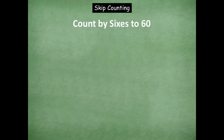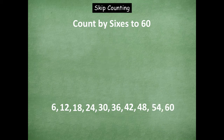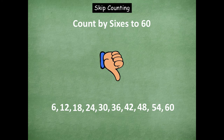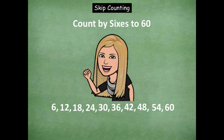Now let's skip count by sixes to sixty. We're gonna start with counting up. Here we go. Six, twelve, eighteen, twenty-four, thirty, thirty-six, forty-two, forty-eight, fifty-four, sixty. Counting down. Fifty-four, forty-eight, forty-two, thirty-six, thirty, twenty-four. Stop. Counting up. Thirty, thirty-six, forty-two, forty-eight, fifty-four, sixty. Awesome job friends, rock on with that.